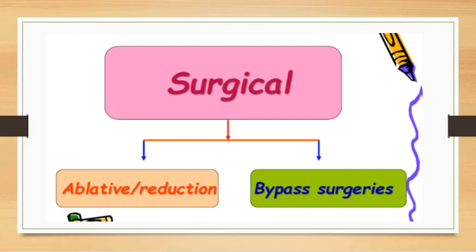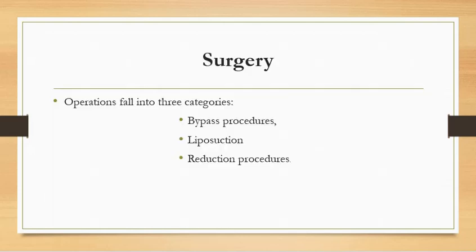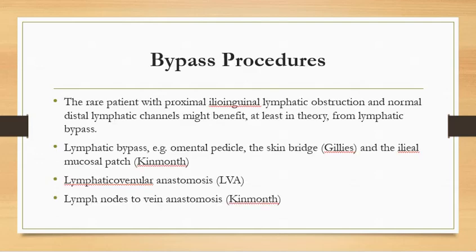Surgical treatment has two parts: bypass surgeries, and ablative and reduction surgery. Bypass surgery is done where investigations show obliteration with dilated lymphatics. Ablative and reduction surgery is used where no such finding is present. Surgery falls into three categories: bypass, liposuction, and reduction. Bypass is indicated in patients with proximal ilioinguinal lymphatic obstruction who have normal distal lymphatic channels — a rare group that may benefit from lymphatic bypass.